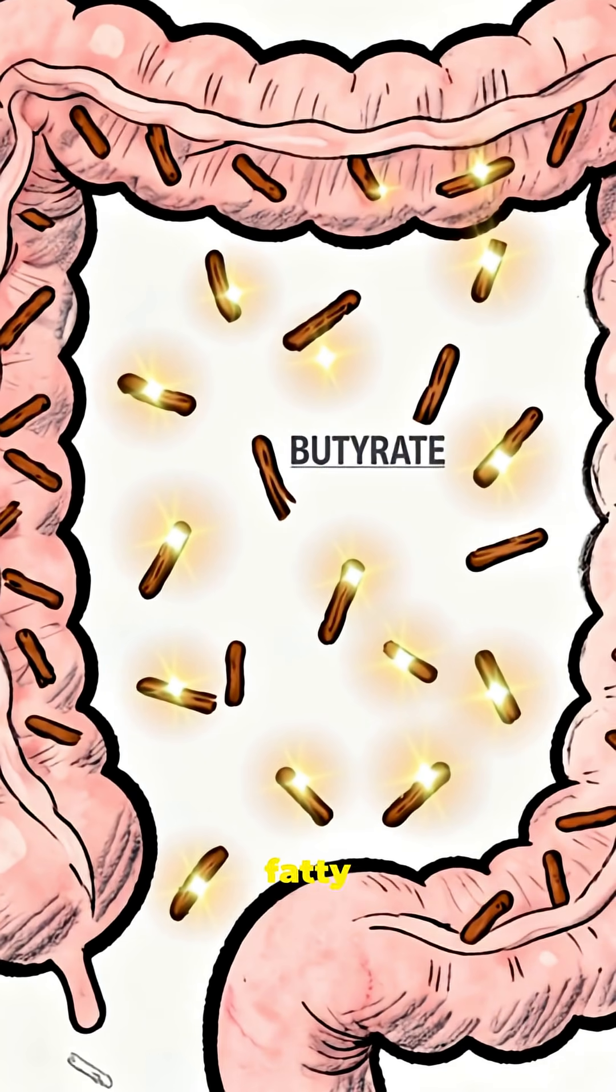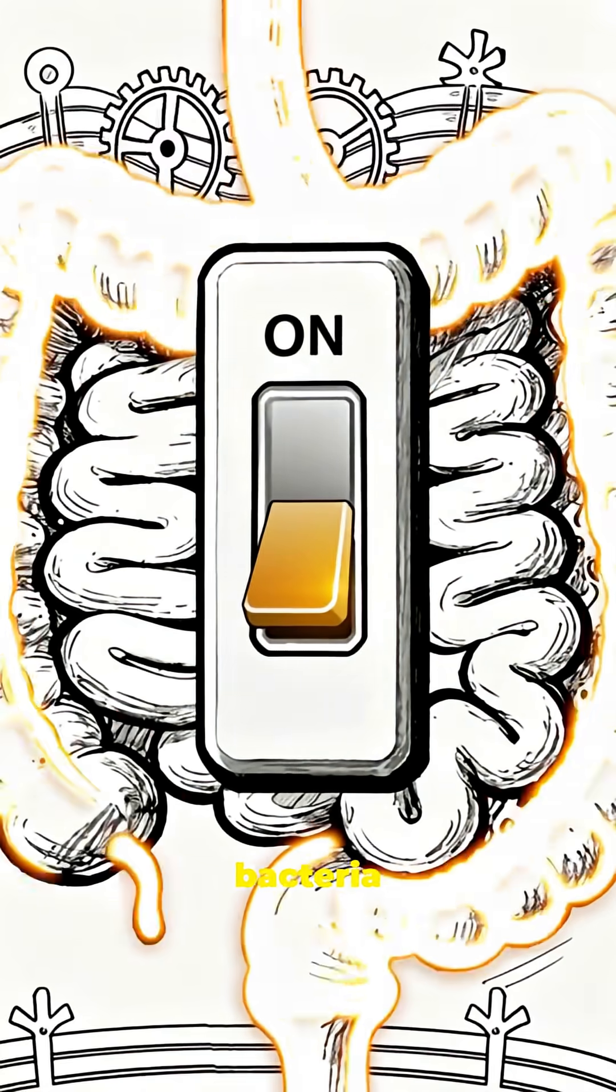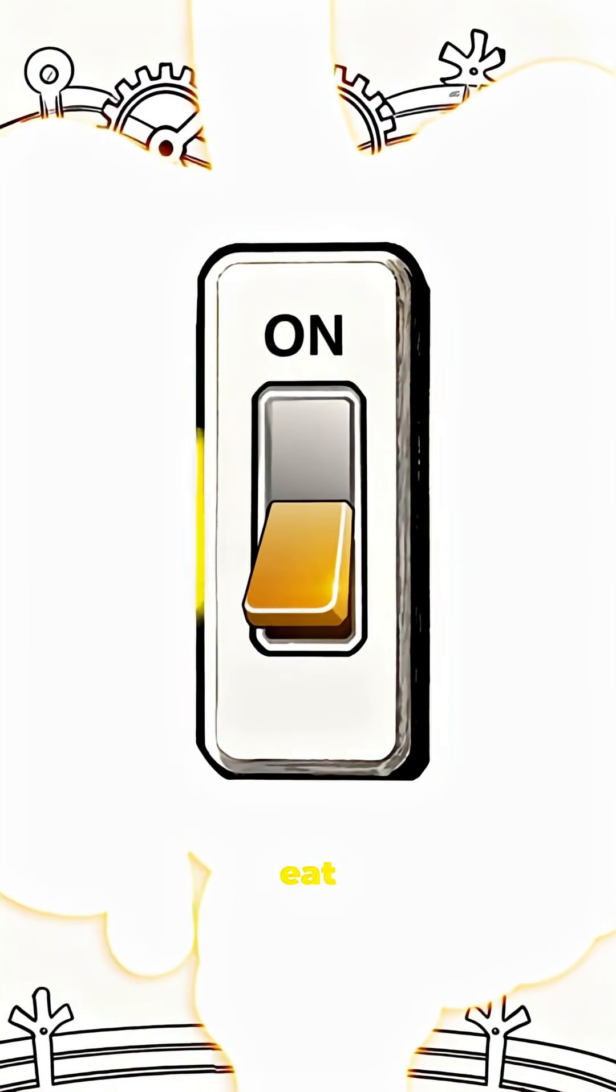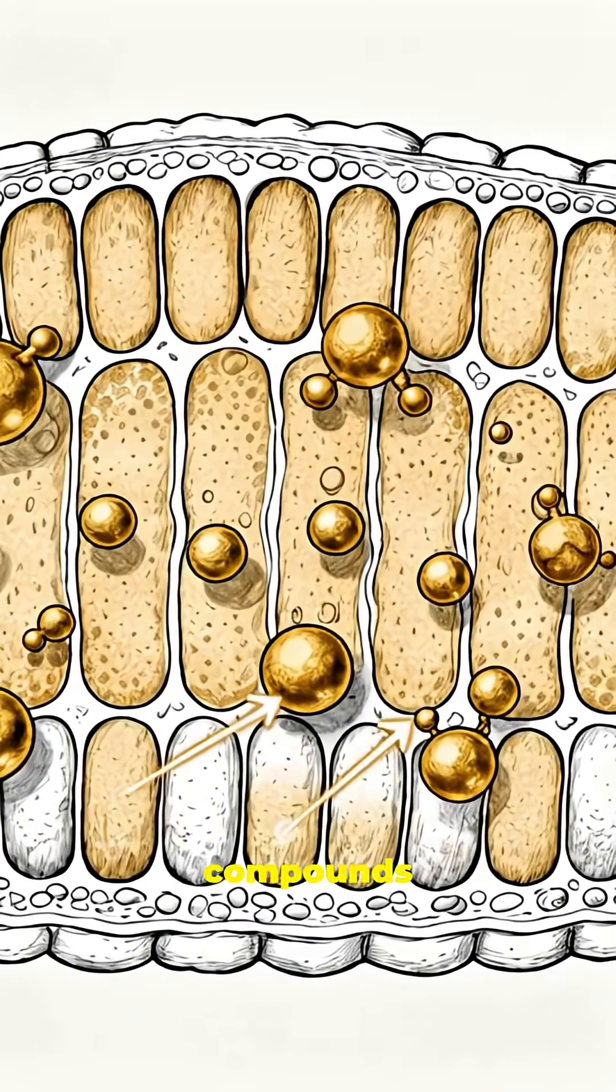Butyrate is a short-chain fatty acid, but it behaves like a master switch for your body. Your gut bacteria make it from the fiber you eat, and once it's created, it becomes one of the most powerful healing compounds you naturally produce.